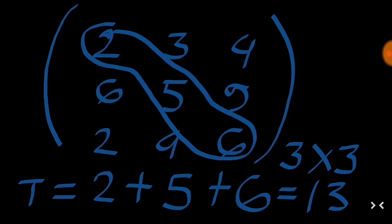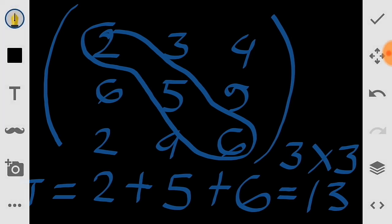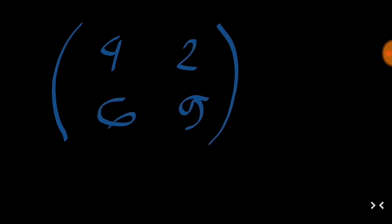Let us take another example of a 2 by 2 matrix like this: 4, 2, 6, 9. You can see this is a 2 by 2 matrix.